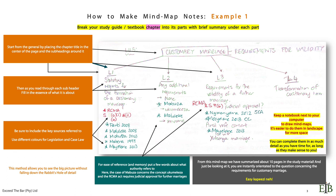From this mind map, we have summarized ten pages in the study material. So remember the rule of thumb: one hundred pages to ten pages. So if you're doing ten pages, do one. Just by looking at it, you are instantly oriented to the question concerning the requirements for customary marriage. Easy peasy.